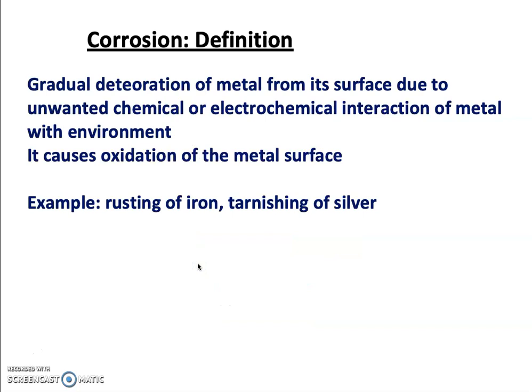Corrosion is the gradual deterioration of a metal from its surface due to unwanted chemical or electrochemical interaction of the metal with the environment. Because of corrosion, the metal surface gets oxidized. Typical examples include the rusting of iron when exposed to the atmosphere, and the tarnishing of silver.